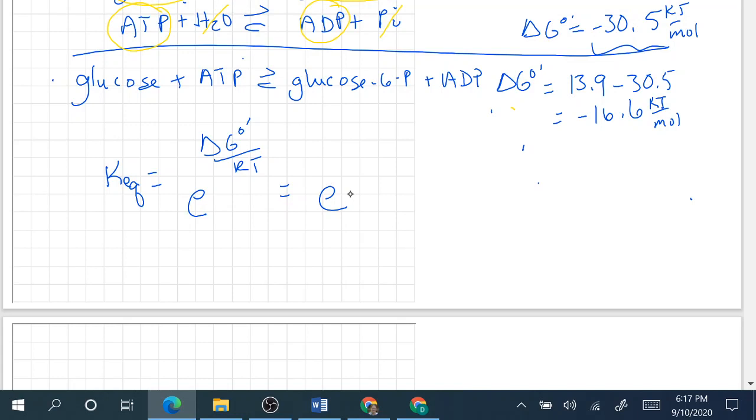We can either do this in kilojoules or joules, it doesn't matter. We're just going to have it in joules, so we can say 16.6 times 10 to the third joules per mole over R, which is 8.314, times the temperature which is in kelvin, which is 310.